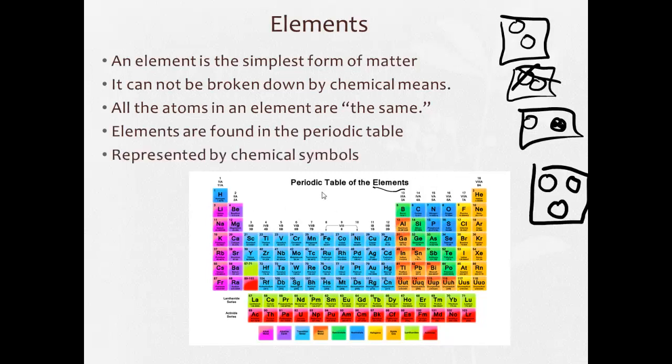And they're represented by chemical symbols. So when we look at any one of these, it's a chemical symbol. The H is a chemical symbol for hydrogen. Li is a chemical symbol for lithium.